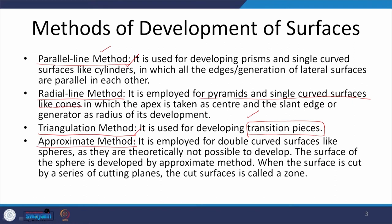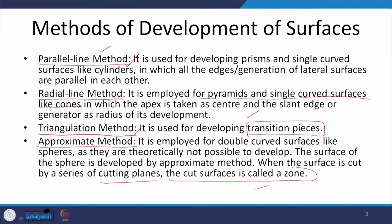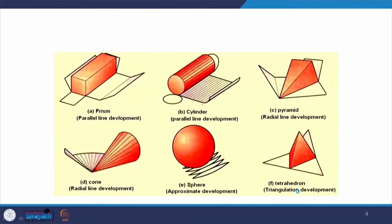The approximate method is what you must have seen when globes are made — smaller pieces are all approximated. There are two ways of approximating the surface of a sphere. The surface is assumed to be cut in a series of cutting planes, and each cut surface is called a zone. We will see how these zones are made as we go through the examples.